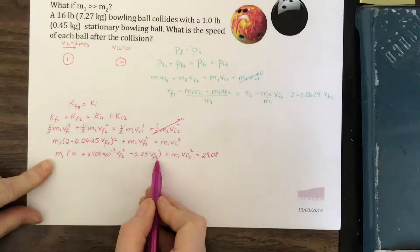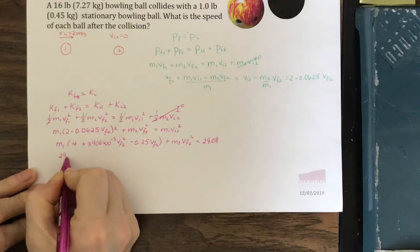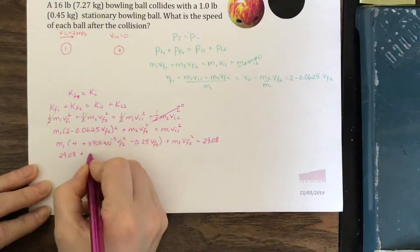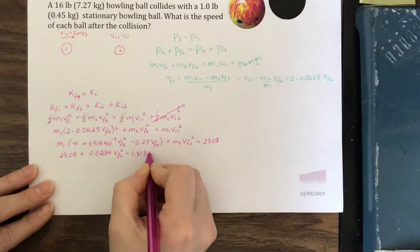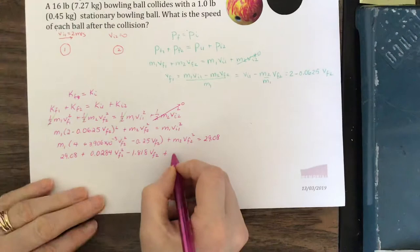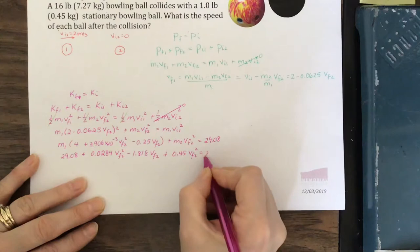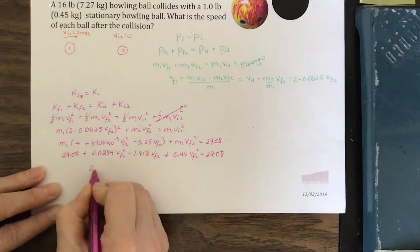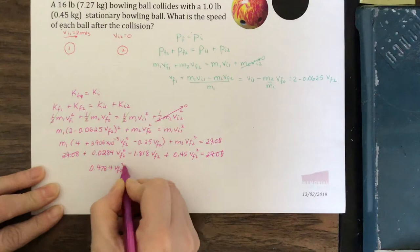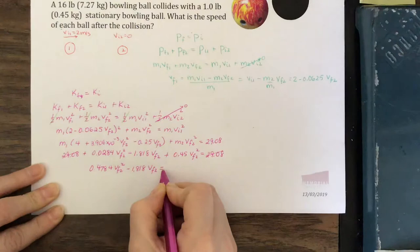Okay, let's multiply our m1 in through all of these terms right here. So we get 29.08 plus 0.0284 vF2 squared minus 1.818 vF2 plus m2 times vF2 squared. m2 is 0.45 equals 29.08. So we have 29.08 on either side. They can subtract off, and now we have 0.4784 vF2 squared minus 1.818 vF2 equals 0.